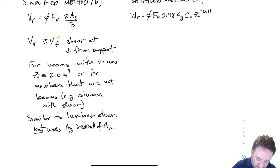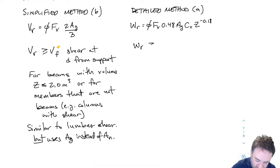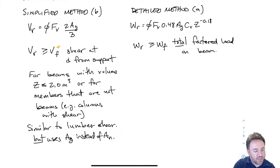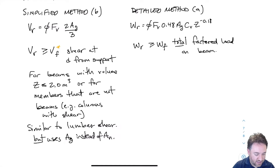For the detailed method, my check is that WR must be greater than or equal to WF. WF is the total factored load on the beam — I add all loads up and find the total factored load in kilonewtons, and I compare that to my WR, which is my detailed method shear resistance to total load.